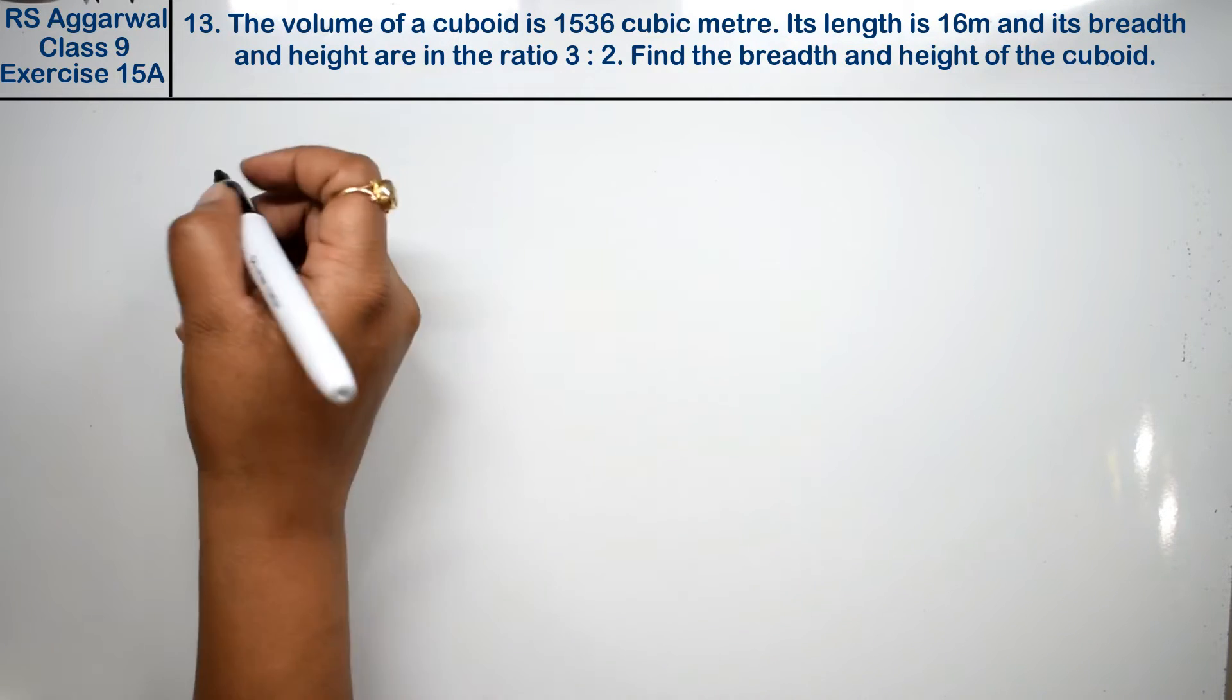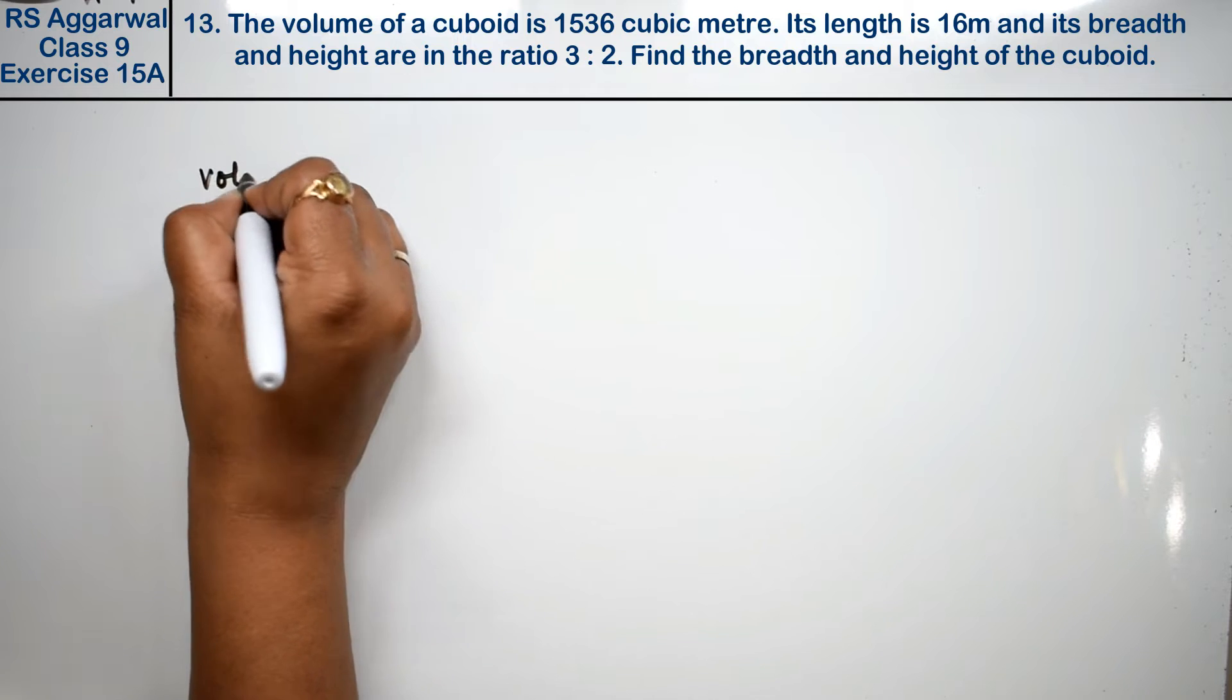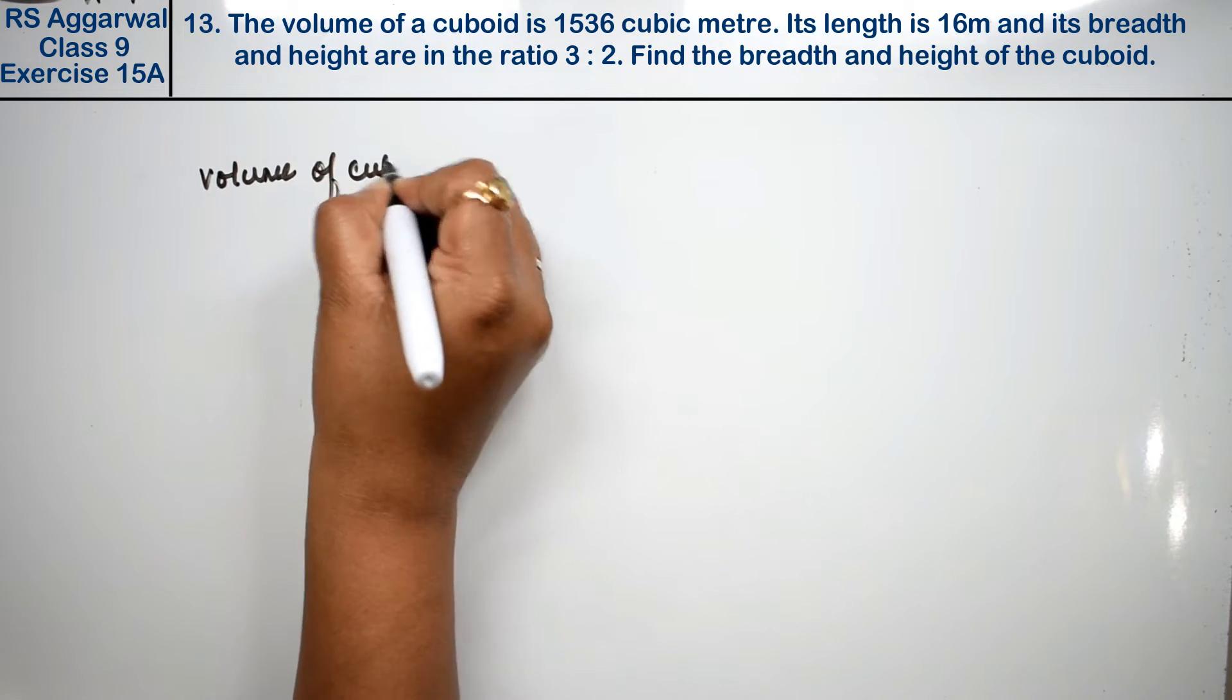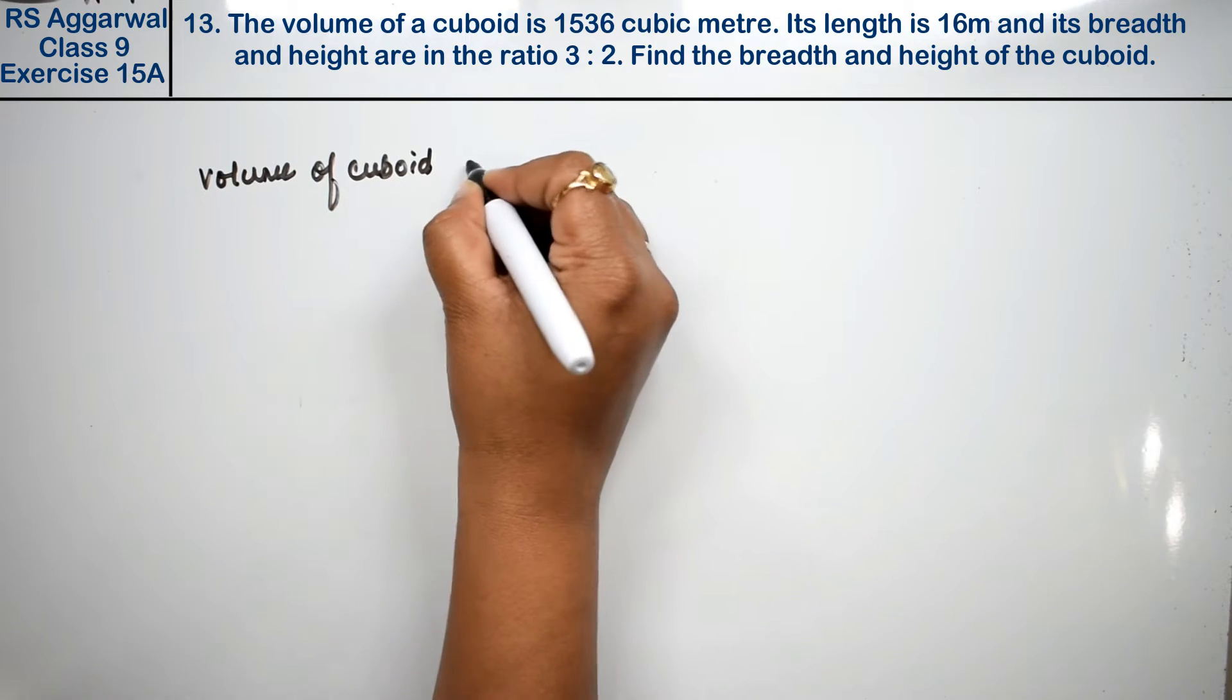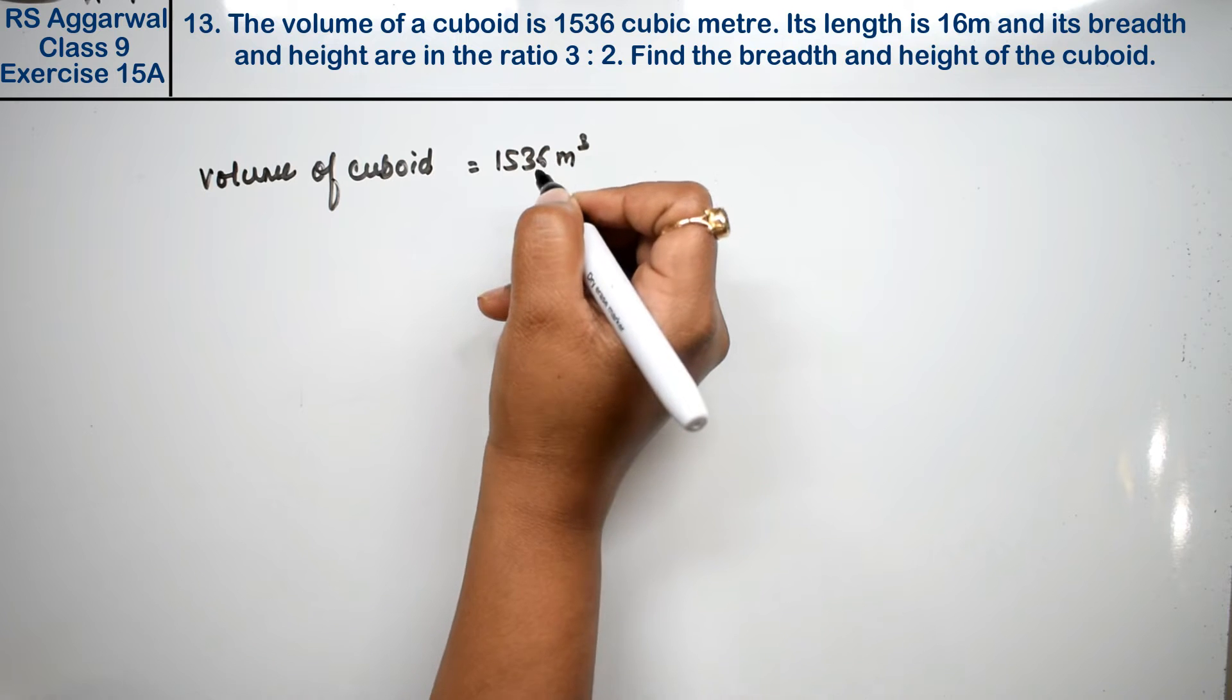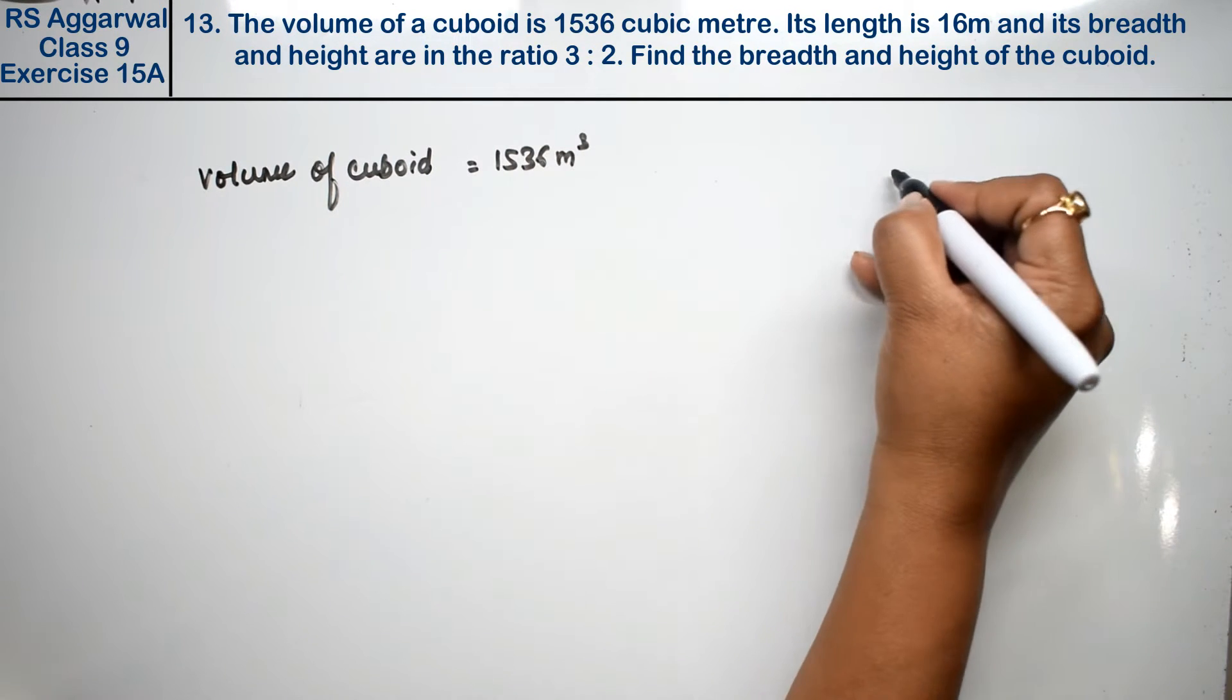This is saying that the volume of a cuboid has been given. What has been given? Let's write first. Volume of cuboid is equal to 1536 meter cube. Its length is 16 meters.